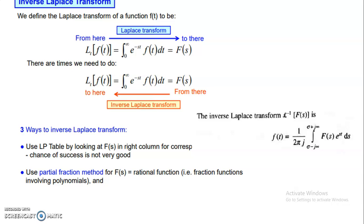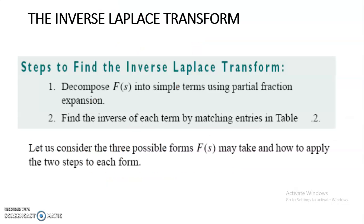Now let us study the Laplace inverse transform. From the Laplace transform, we shift from variable t to parameter s. In the inverse, we shift back from s to t. The inverse Laplace transformation is given by the integral 1 over 2 pi j, from sigma minus j omega to sigma plus j infinity, of f of s times e raised to st ds. To find the inverse, we use the Laplace properties table and look up f of s in the right column, working in the reverse direction using partial fractions.